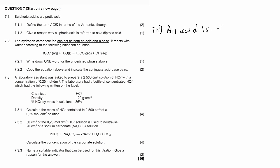So we say an acid is a substance that produces hydronium ions (H3O+) in water.